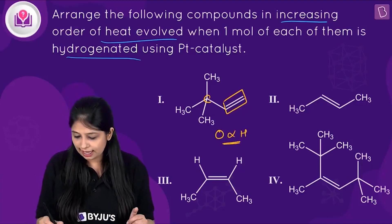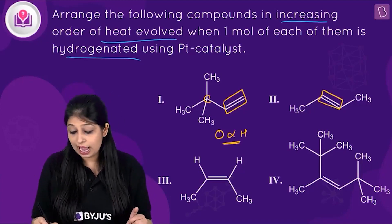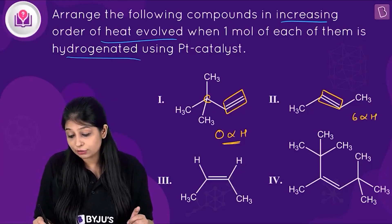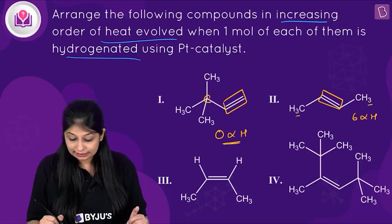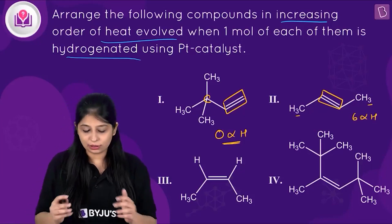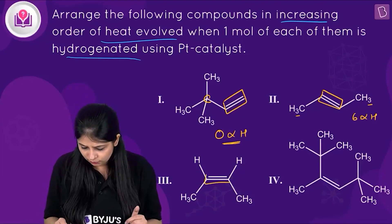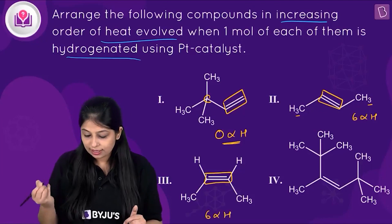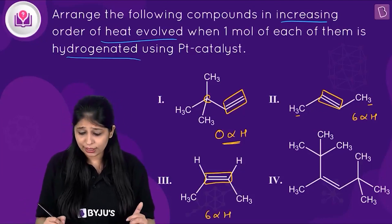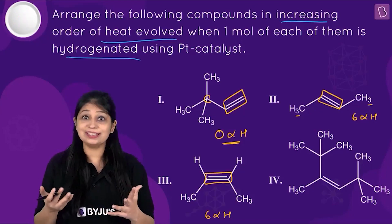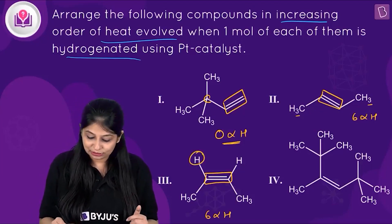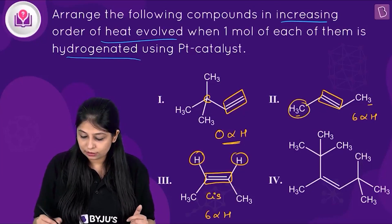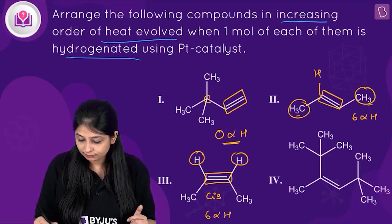In the second alkene, we have two alpha carbons which have a total of six alpha hydrogens attached to them. In the third alkene, we also have two alpha carbons with a total of six alpha hydrogens. The second and third are geometrical isomers of each other.